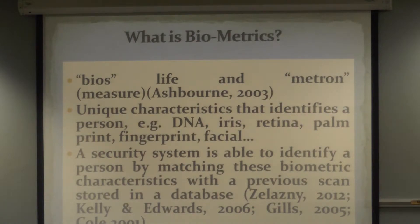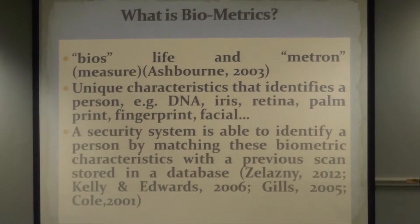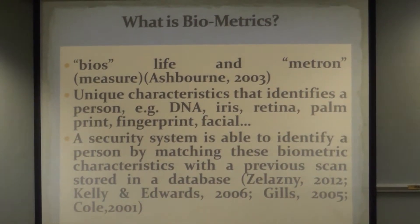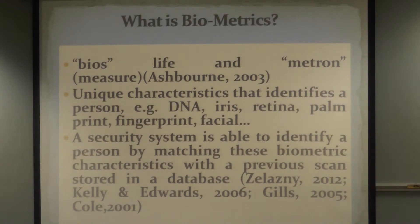What is biometrics exactly? It is derived from the Greek word 'bios', which means life, and 'metron', which means measure. In other words, you measure unique characteristics of a person. It can be his DNA fingerprint, palm print, even his scent, his iris, his retina — different parts of the body can these days be identified. If it's recorded on a database, then you can identify that person.